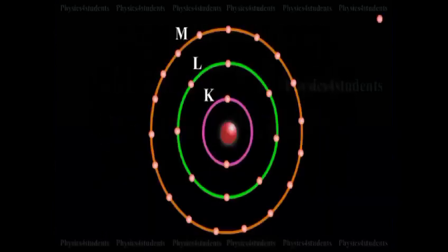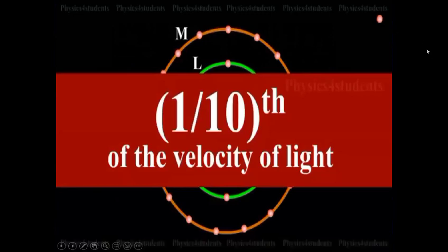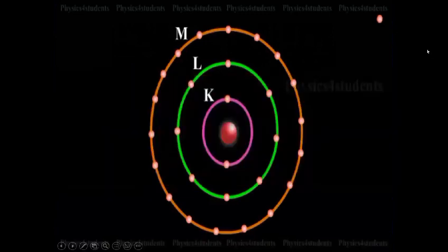A few of the fast-moving electrons having a velocity of about one-tenth of the velocity of light may penetrate the surface atoms of the target materials and knock out the tightly bound electrons even from the innermost shells like K-L shells of the atom.